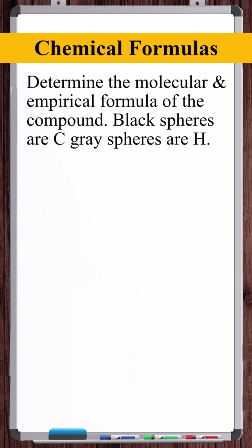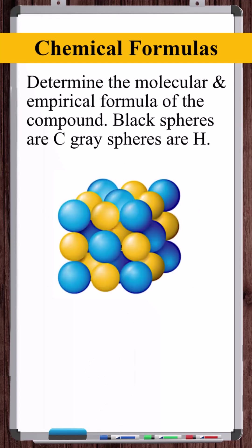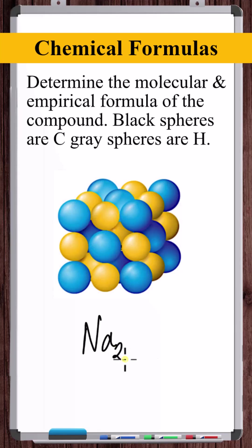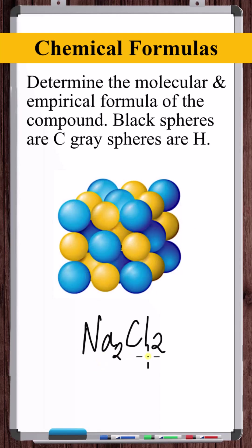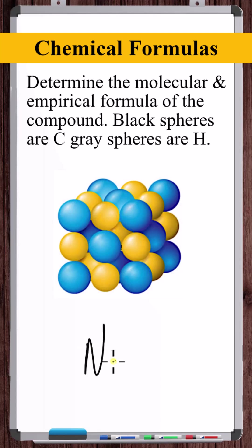Consider something like NaCl, an ionic compound. It makes no sense to say the chemical formula is Na2Cl2 — there are no discrete molecules here, it's an infinite lattice. If we're going to say Na2Cl2, then why not Na5Cl5 or Na10Cl10? It only makes sense to report the empirical formula — the proportions: one part sodium to one part chlorine.